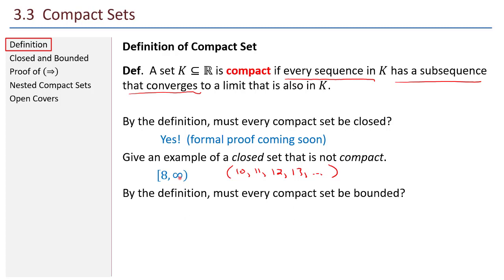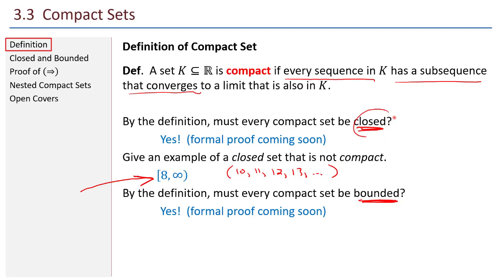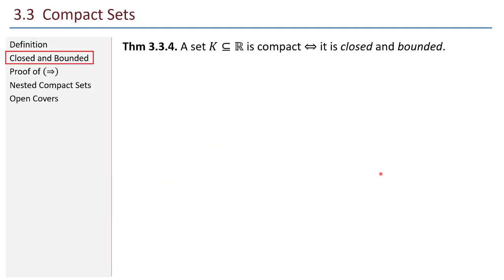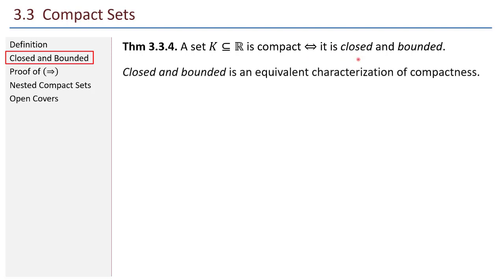By the definition, must every compact set be bounded? The answer is yes, and it turns out this is a biconditional: the set K is compact if and only if it is closed and bounded. Closed and bounded is an equivalent characterization of compactness. Whenever you hear the word compact, you can just think: closed and bounded.